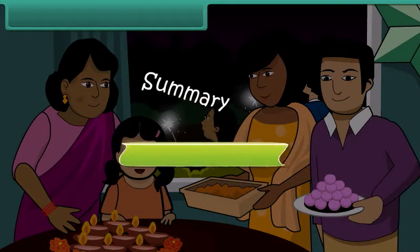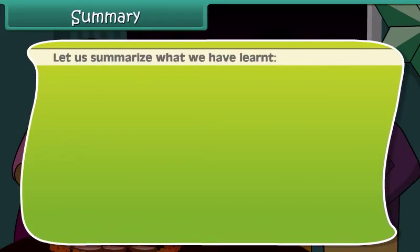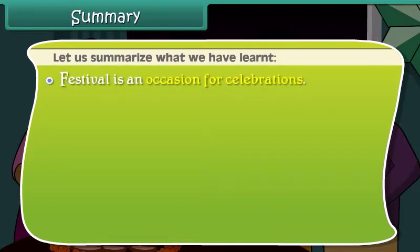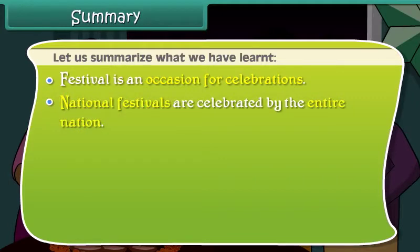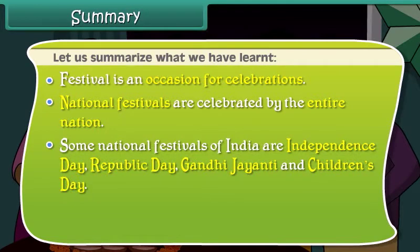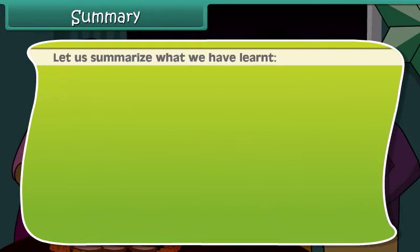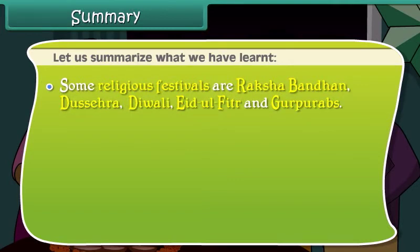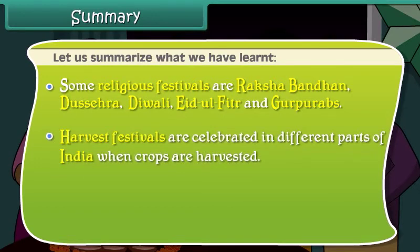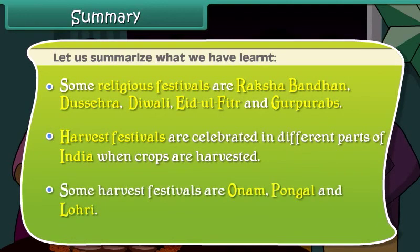Summary. A festival is an occasion for celebrations. National festivals are celebrated by the entire nation — some national festivals of India are Independence Day, Republic Day, Gandhi Jayanti, and Children's Day. Religious festivals are celebrated by different religions; some examples are Raksha Bandhan, Dussehra, Diwali, Eid ul-Fitr, and Guru Purabs. Harvest festivals are celebrated in different parts of India when crops are harvested; some examples are Onam, Pongal, and Lohri.